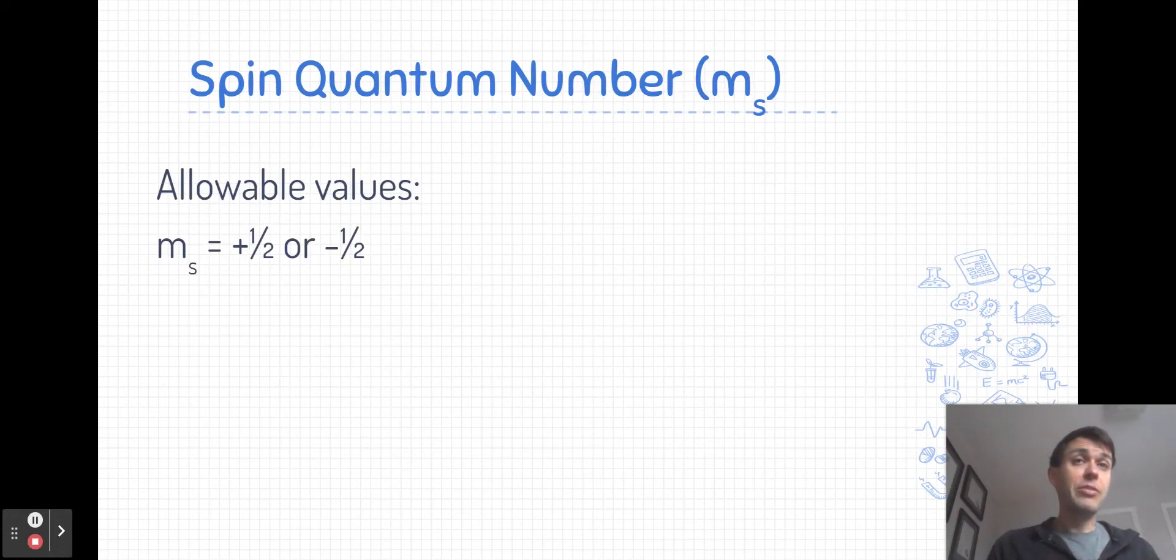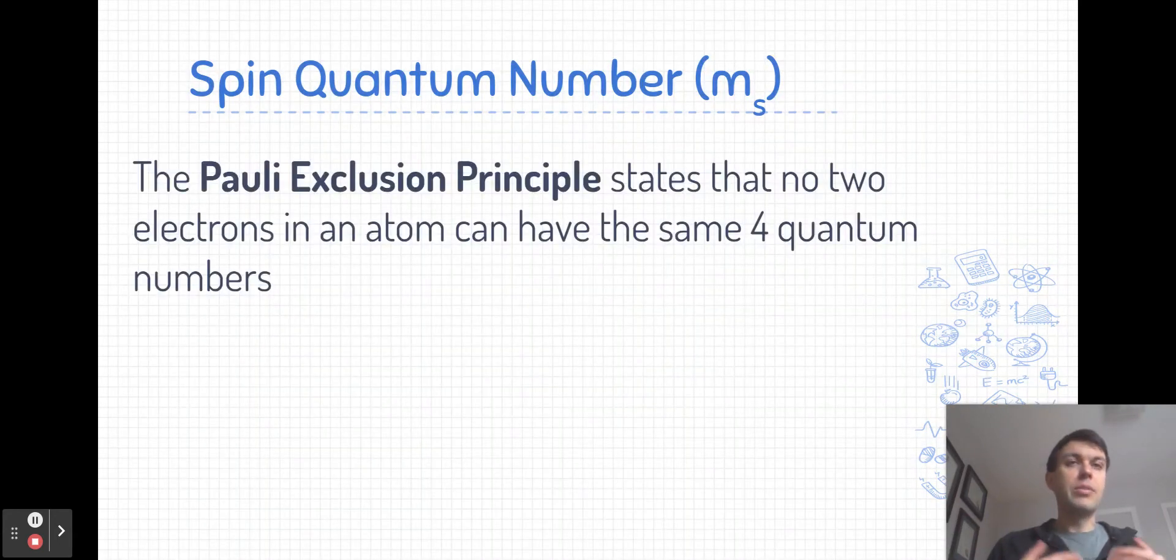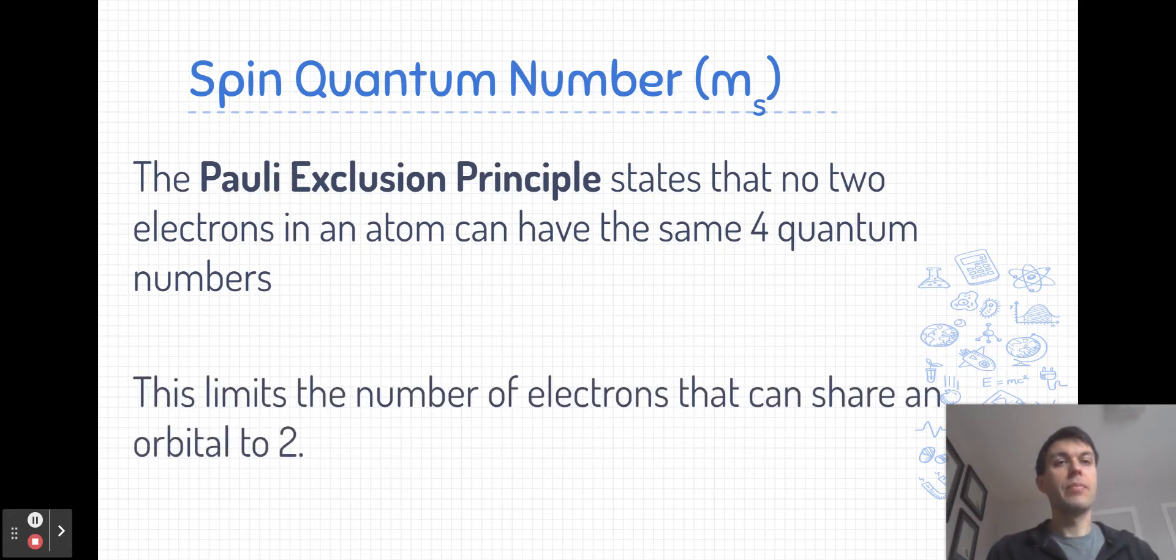There are two allowable values for the spin number, and they are opposing numerical values: positive one-half and negative one-half. In every orbital, one electron is assigned the positive one-half m_s value and the other electron is assigned the negative one-half value. So only two possible values. There's an important principle in physics and chemistry called the Pauli exclusion principle, and it states that no two electrons in an atom can have the same four quantum numbers.